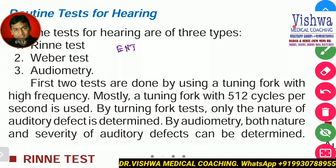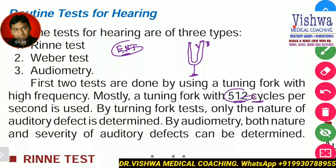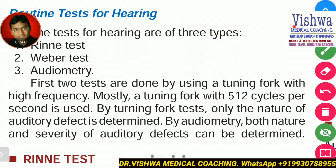In physiology, understand that there are some tuning fork tests. The tuning fork is an instrument with two prongs that vibrate at a specific frequency — 512 cycles per second. This is an objective way of identifying hearing defects. We have Rinne's test, Weber's test, and audiometry. Audiometry is the most objective test.